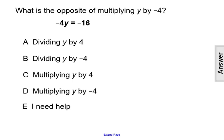So we want to do the opposite of multiplying. The opposite of multiplying is the inverse operation of multiplying, which would mean dividing or division. So if we had multiplying y by negative 4,